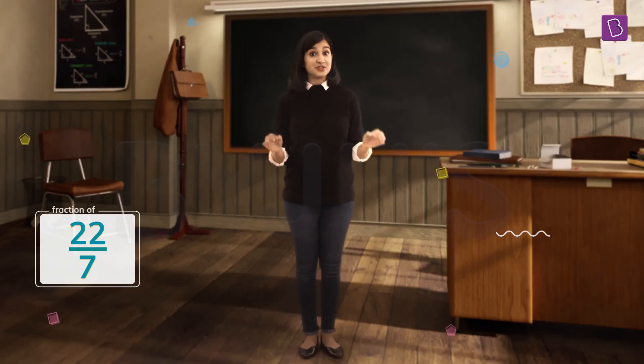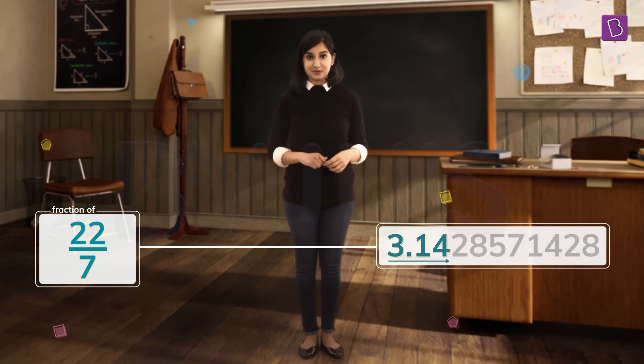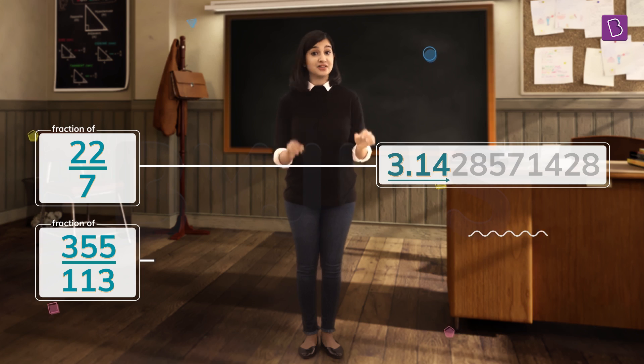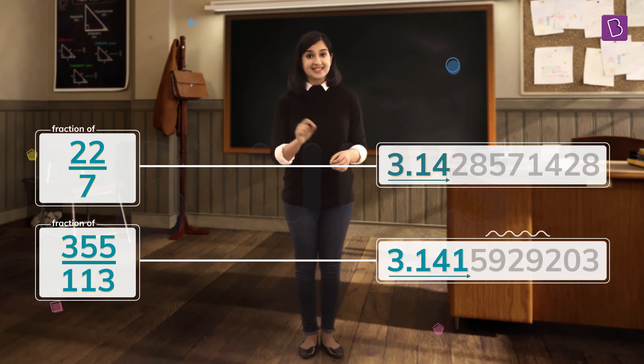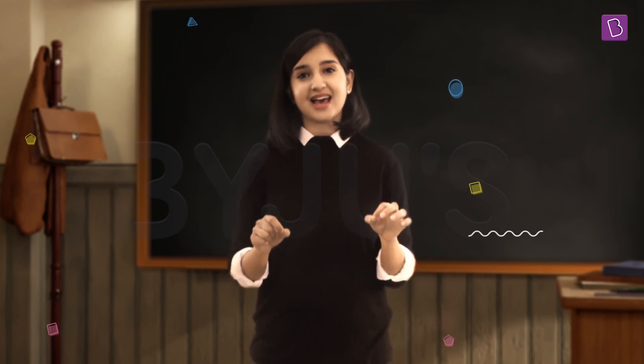Although the approximation 22 by 7 gives us a value accurate to 2 decimal places and the fraction 355 by 113 to 8 decimal places, which is accurate enough to do simple calculations, the endeavor into finding the most accurate value of pi is still ongoing.